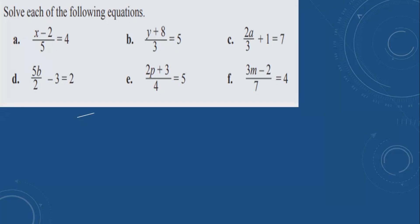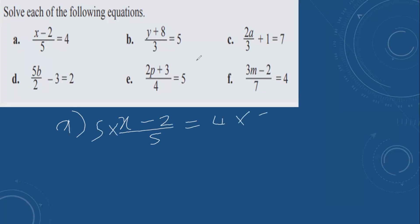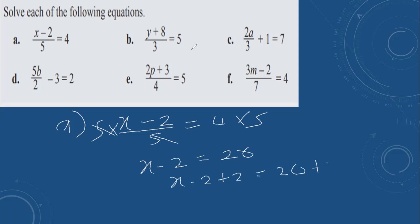Problem a: (x minus 2) over 5 equals 4. Remove the 5 by multiplying both sides by 5. 5 and 5 cancel. So x minus 2 equals 20. The opposite of minus 2 is plus 2. 20 plus 2 is 22. x is equal to 22.